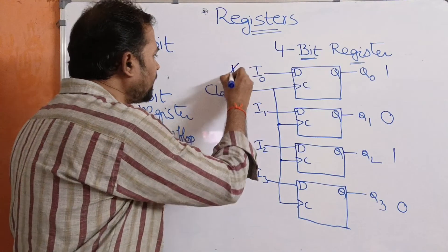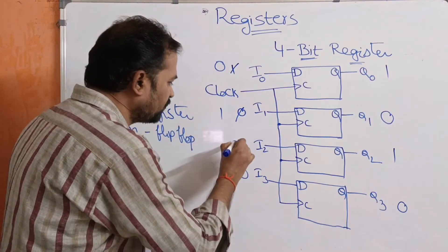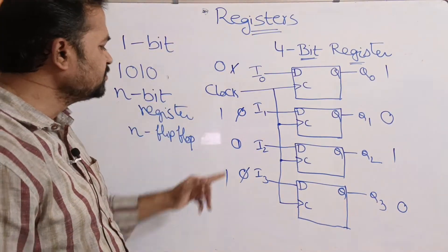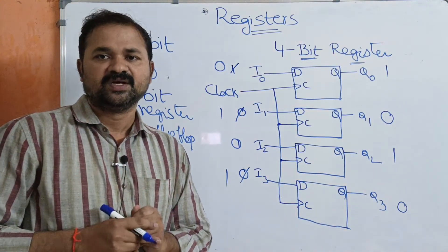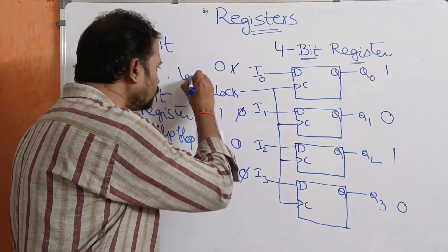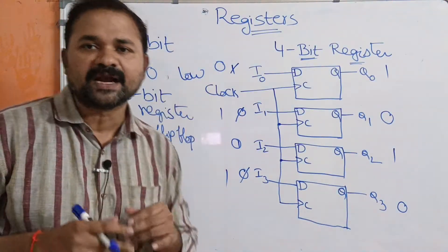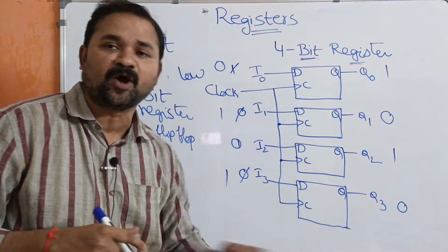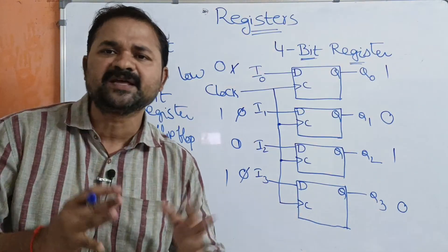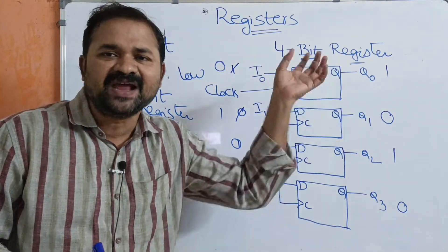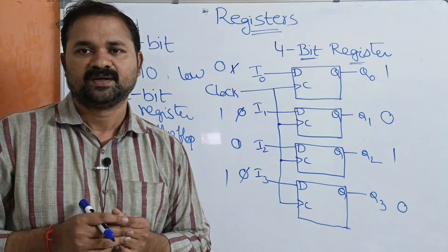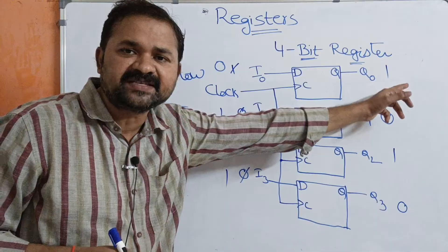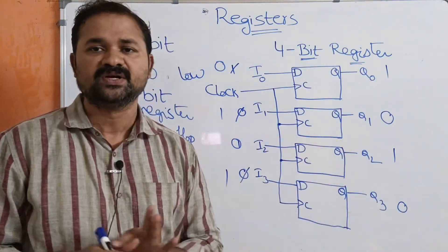Now assume that instead of 1010, we have applied inputs 0, 1, 0, 1. But this time the clock input is low, meaning we have not applied the clock pulse to the flip-flops. If you don't apply the clock pulse, the register will retain the previous information only. The previous information was 1, 0, 1, 0, so we will still get 1, 0, 1, 0 as the output.